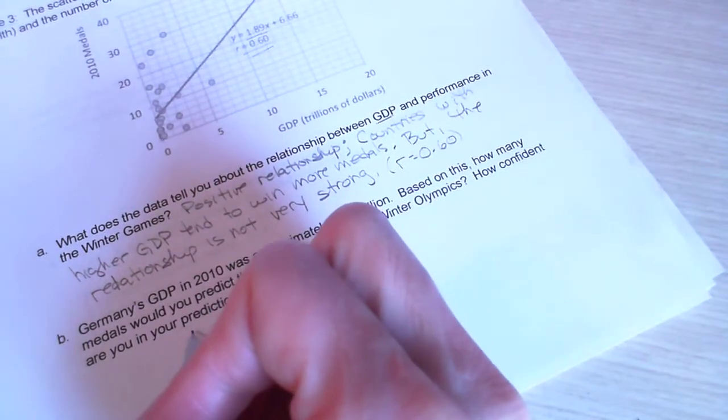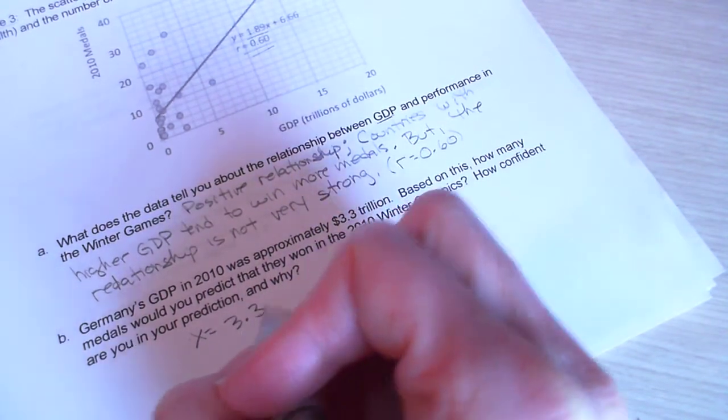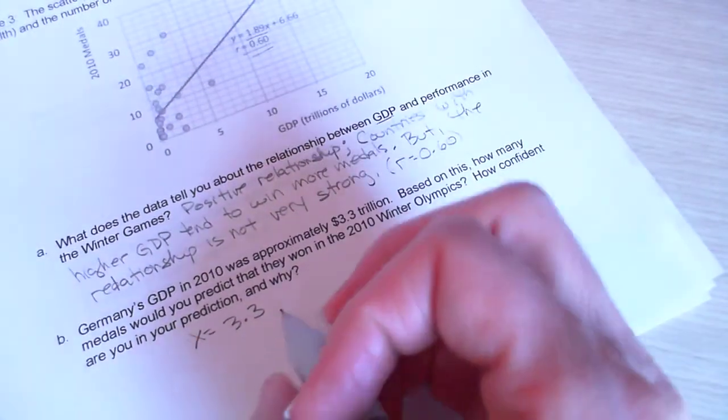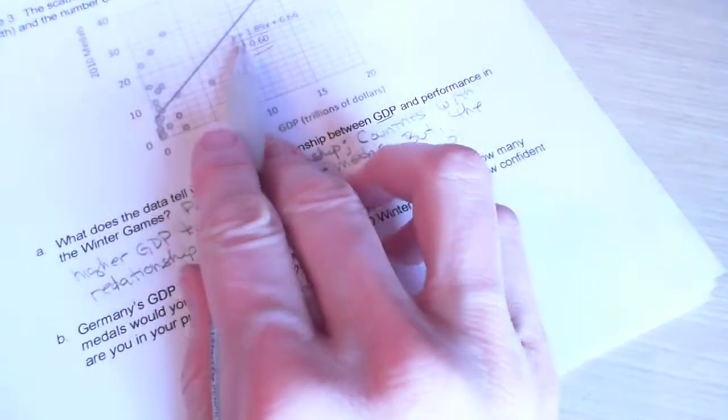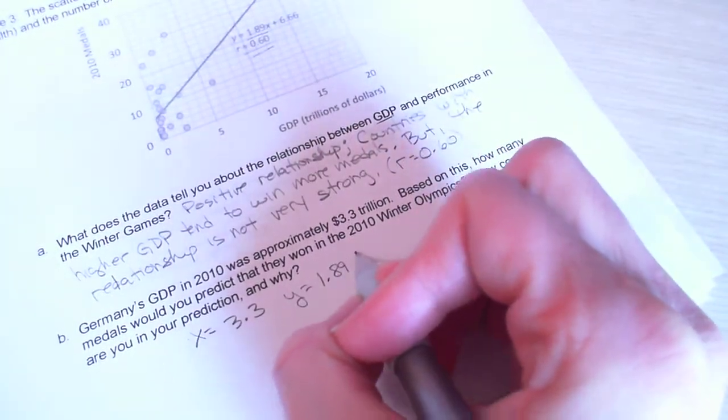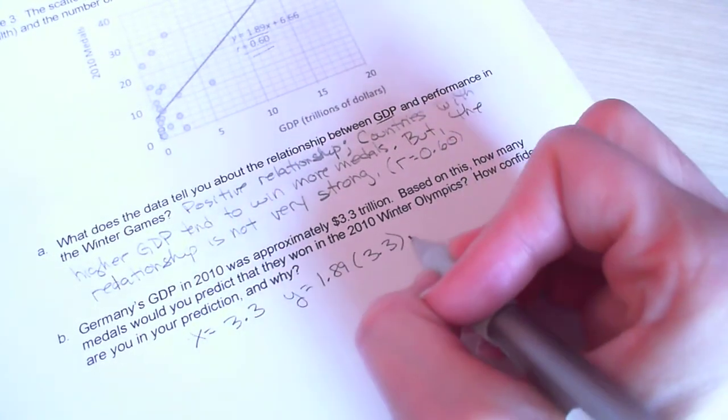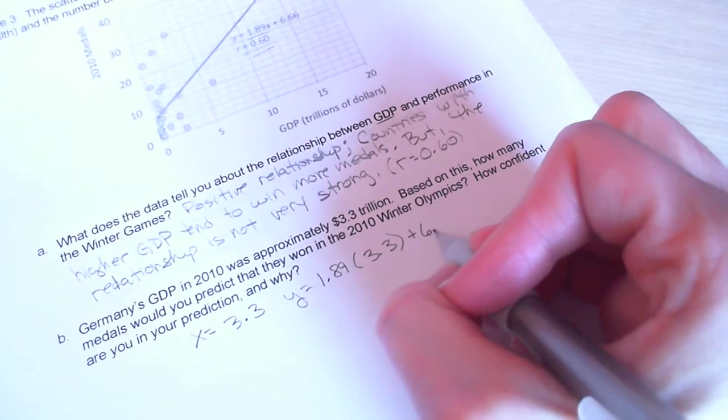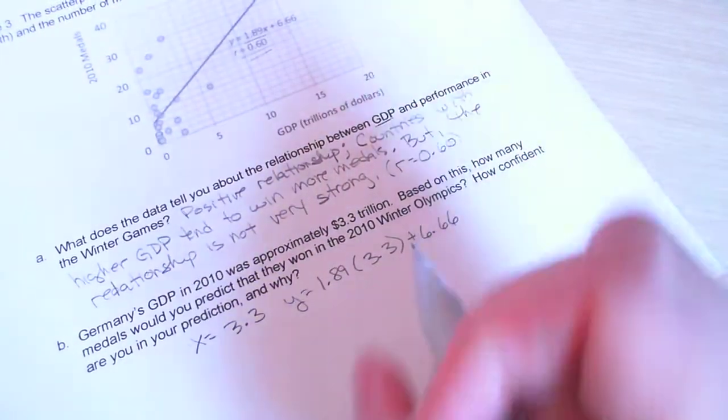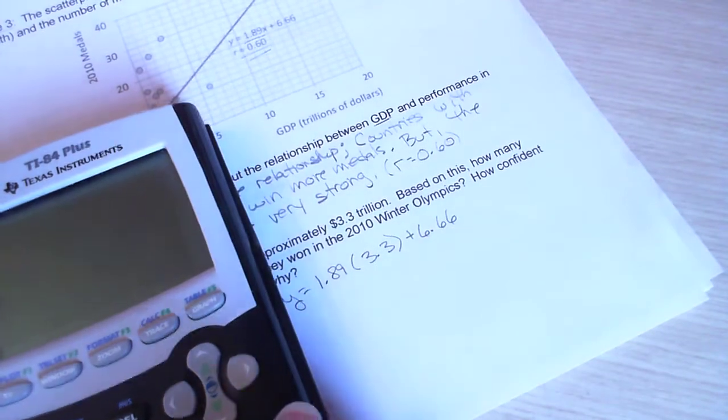So, we want to take this equation that they gave me up here. Slope of 1.89 times 3.3 plus 6.66. Okay. Let's put that in our calculator here. Let's clear this out. So, I have 1.89 times 3.3 plus 6.66